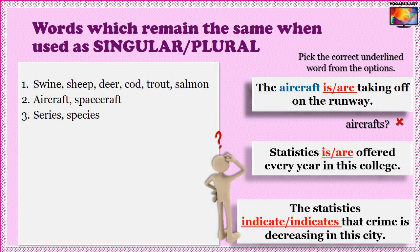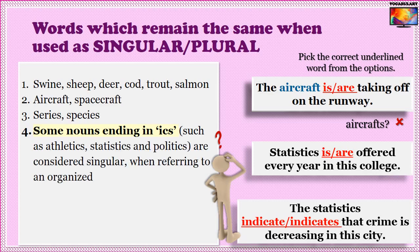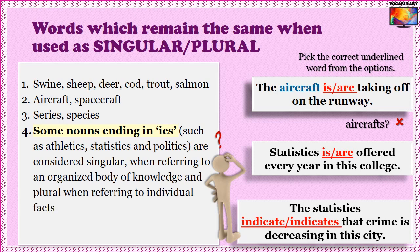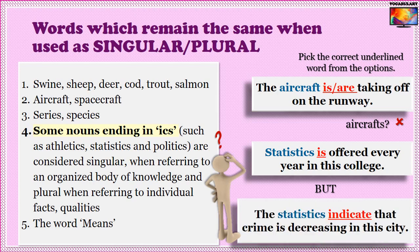Some nouns ending in ICS — such as 'athletics,' 'statistics,' and 'politics' — are considered singular when referring to an organized body of knowledge, and plural when referring to individual facts or qualities. So we say 'Statistics is offered every year in this college' because statistics refers to a subject here. But we would say 'The statistics indicate that crime is decreasing in this city' because statistics refers to individual graphs or numbers being used as evidence.